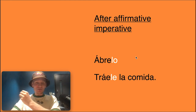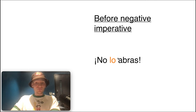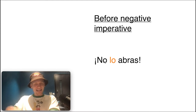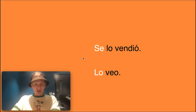With the negative imperative, however, the pronoun comes before the verb: no lo abras — 'don't open it.' It's not no abraslo. It just sounds odd the other way. So those placement rules need to be learned alongside the actual direct and indirect object pronouns themselves.